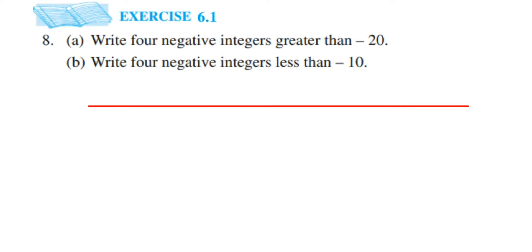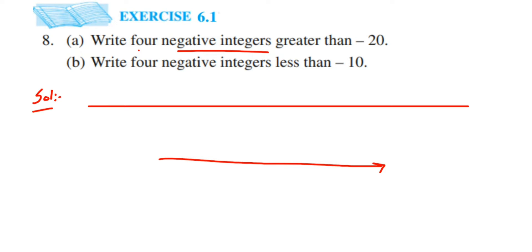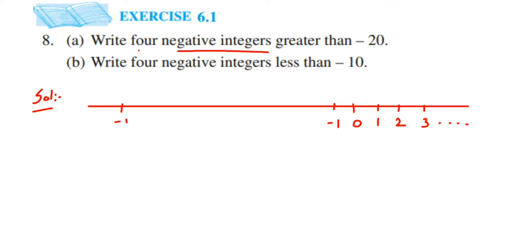So here is the solution. They are asking us to write down four negative integers — only negative integers, not positive — which are greater than minus 20. As we go towards the right-hand side of the number line, the value of the number increases. On the right of zero we have positive integers: one, two, three and so on. On the left we have negative integers starting with minus one, minus two, minus three, minus four, and so on.